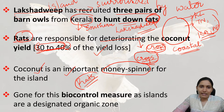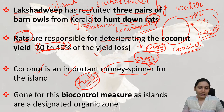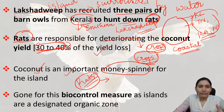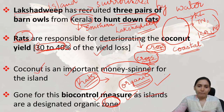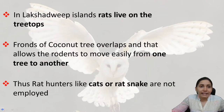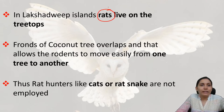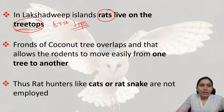Now, why did they go for a bio-control measure instead of pesticides or chemicals? Because the islands are designated as an organic zone. Being in the organic zone, they adopted bio-control measures. Another reason is that in Lakshadweep, rats live only on the tree tops, and the fronds of the coconut trees overlap, allowing the rodents to move easily from one tree to another.